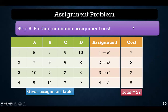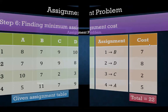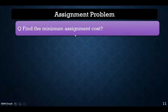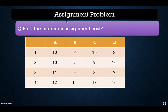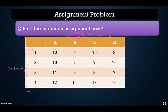We will now solve one more problem using the Hungarian method. Again, we have to find the minimum cost. We have four different jobs and four different contractors. We have to assign each job to one contractor. Our target is to minimize the assignment cost, and we'll use the Hungarian method to reduce the assignment cost.